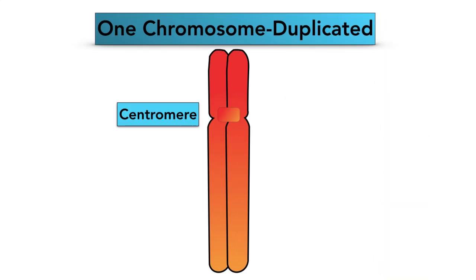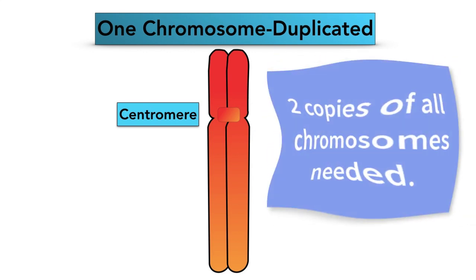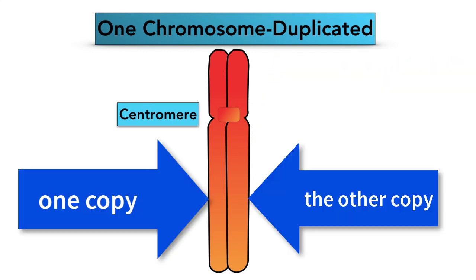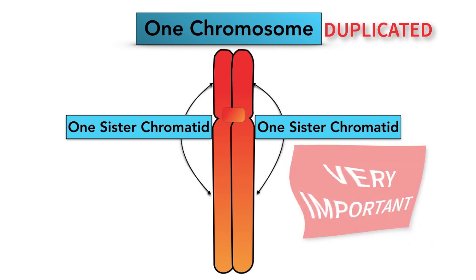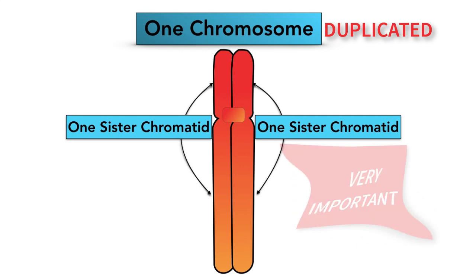It's really important that you recognise a duplicated chromosome diagram. Remember, two copies of all chromosomes are needed for mitosis. There's one copy on the left and another on the right, and each copy is known as a sister chromatid. It's very important that you know the phrase 'sister chromatid'.